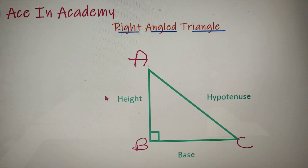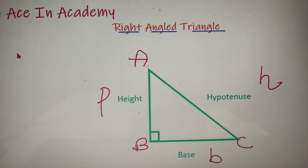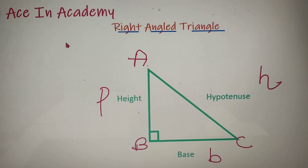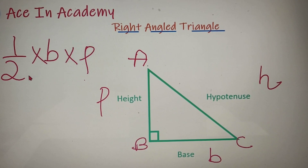If I take the height as P, the base as B, and the hypotenuse as H, then the perimeter of the right-angled triangle is equal to P plus B plus H. The area of a triangle is equal to half into base into height, so the area equals half into B into P, where B is the base and P is the height.